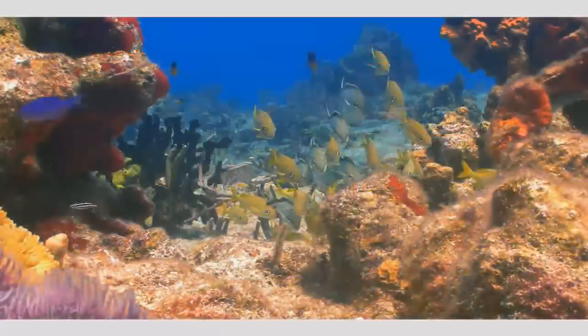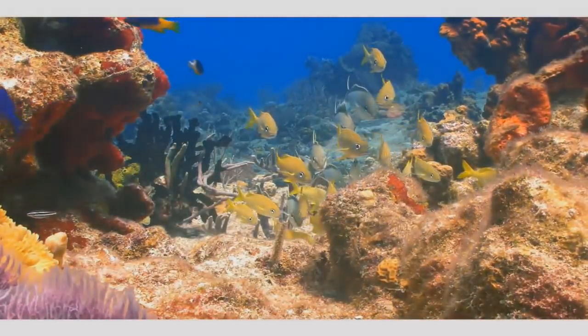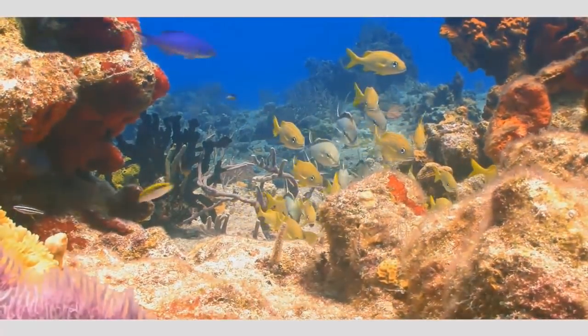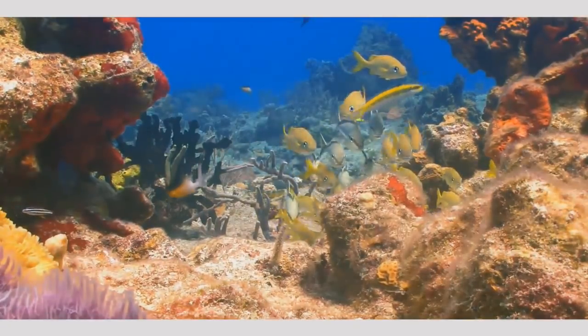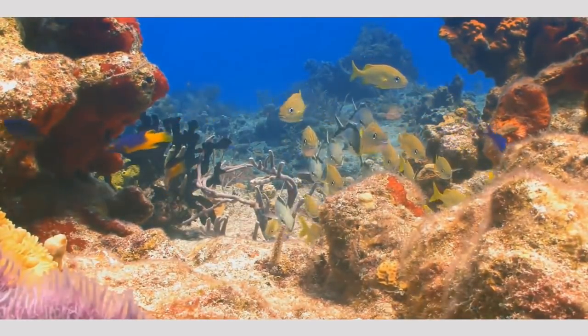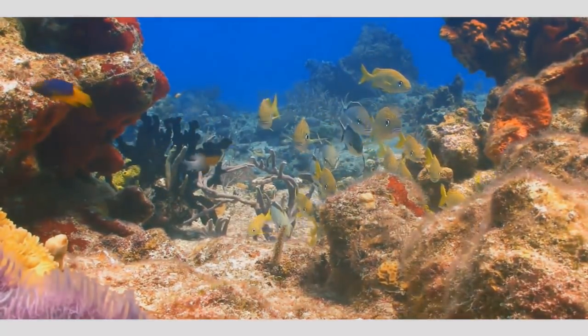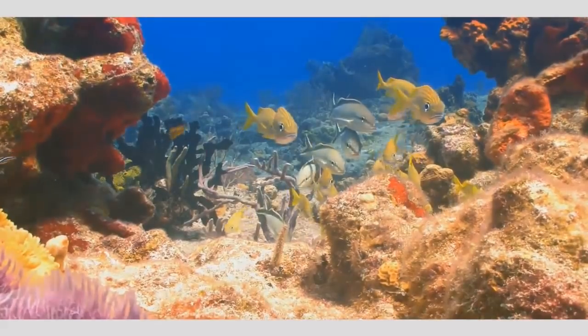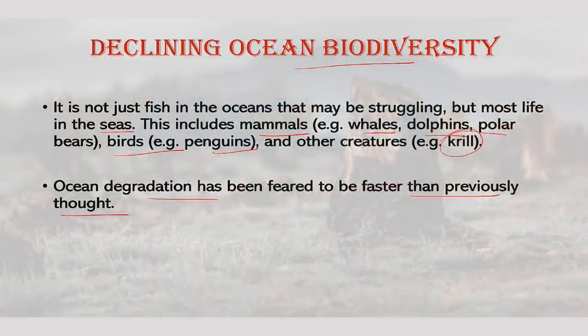This includes mammals also — whales, dolphins, polar bears, birds, penguins and other creatures, and even krill. Ocean degradation has been feared to be faster than previously thought. An estimated 100 million sharks are being killed each year according to the journal Marine Policy, which published a report in 2013, representing the most accurate assessment to date. Millions are killed from overfishing and trade — many die accidentally in fishing nets set for tuna and swordfish.